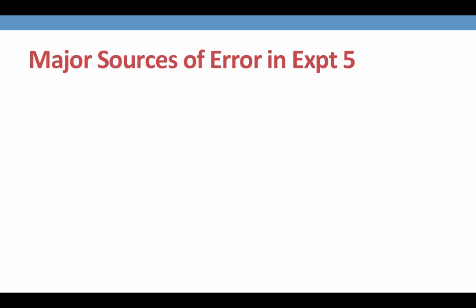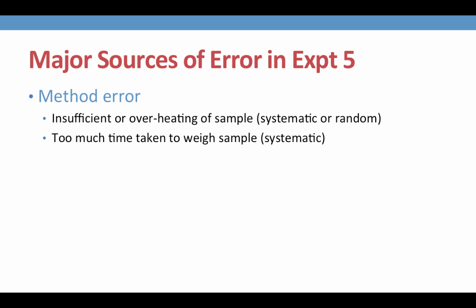In specific, there are several sources of error that come from experiment 5. The method error could be involved in not heating to constant weight, so insufficient heating of the sample. Insufficient heating of the sample would be a systematic error, since not heating to constant weight will always give us a lower percent hydrate, lower percent water in our hydrate, than if we did heat to constant weight.